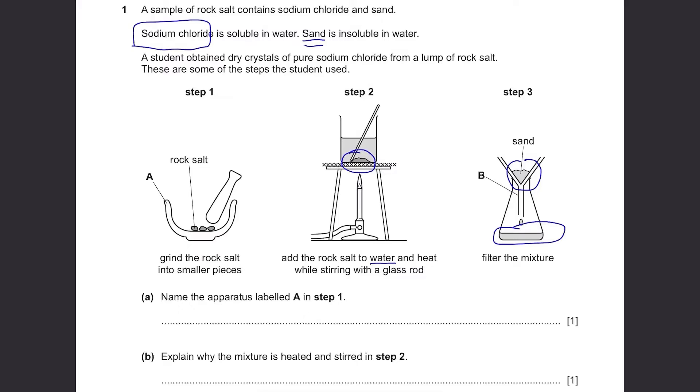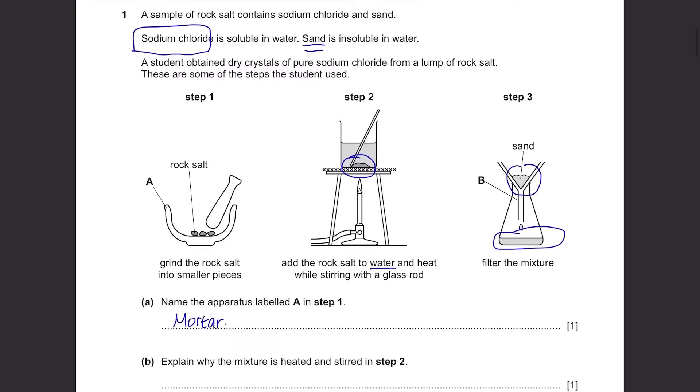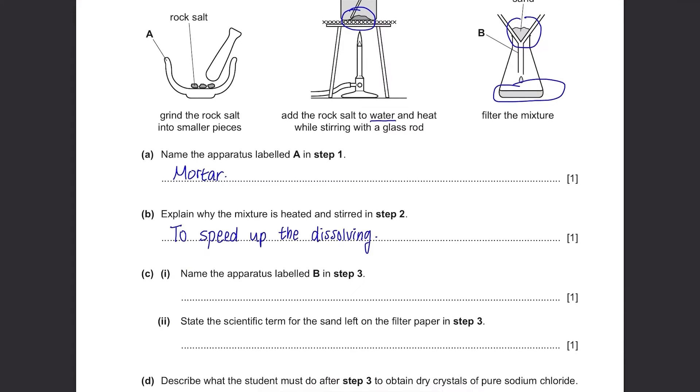Part A: Name the apparatus labeled A in step 1. For this kind of question, you have to know the answer beforehand. It's called a mortar. Part B: Explain why the mixture is heated and stirred in step 2. It's so that sodium chloride can dissolve in water quickly, so that you don't have to wait forever for it to dissolve.